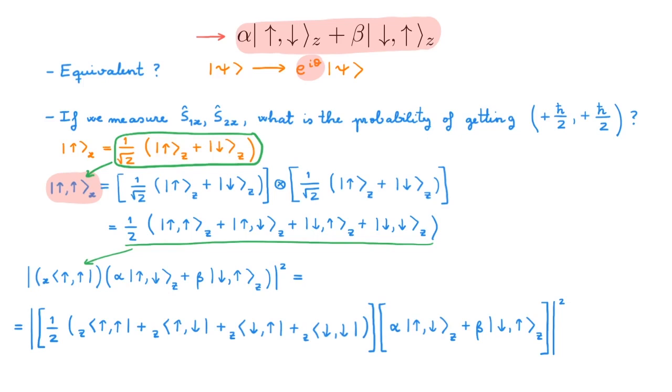The only combinations that don't give zero in the bracket are this term with this term, and this term with this term. Therefore the result is absolute value of one half alpha plus beta all squared.